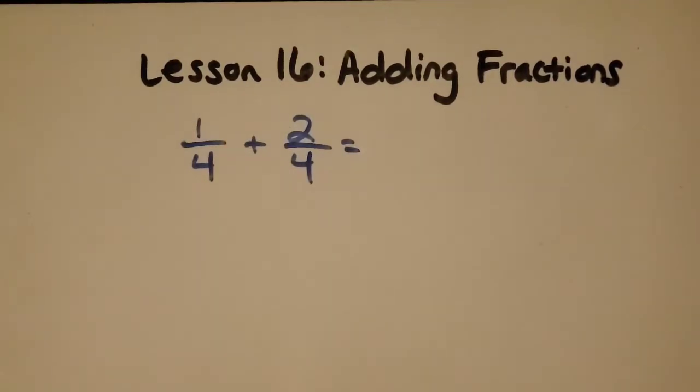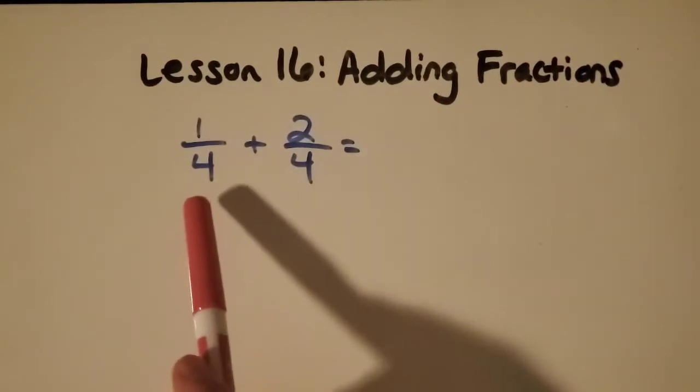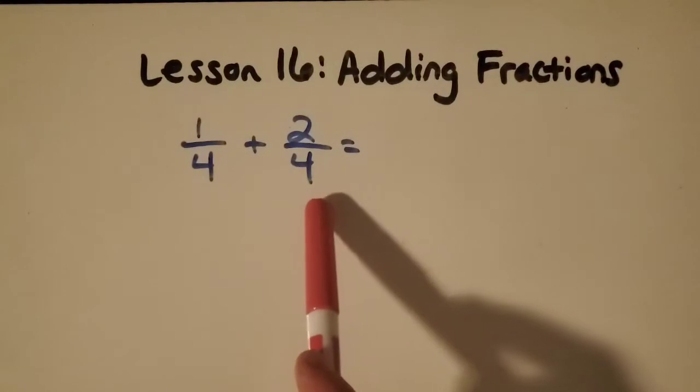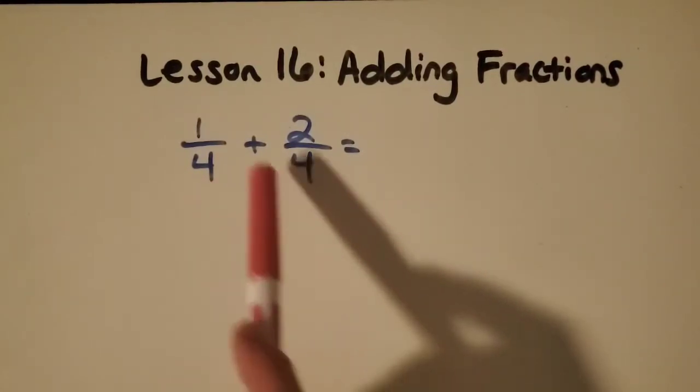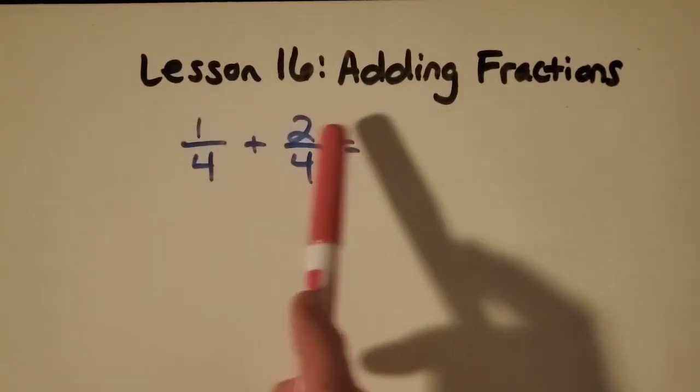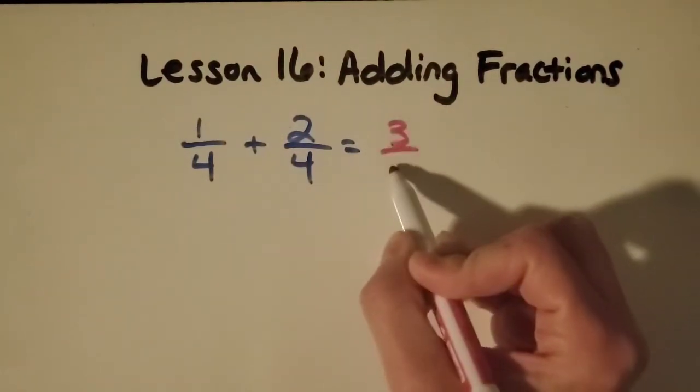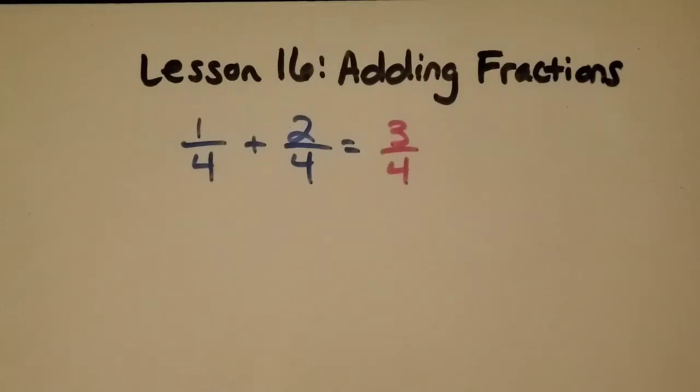This first example is super easy because the denominators are the same. We've got fourths and fourths. So when the denominators are the same, you just add the numerators. So one plus two is three, and you keep the same denominator, so it's three-fourths.